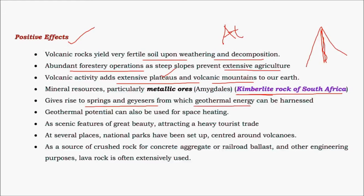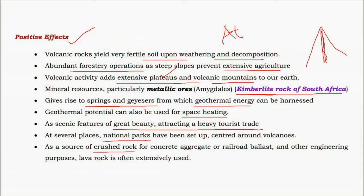Geothermal springs and geothermal energy can also be used for space heating. These are a direct result of volcanic activity. Volcanic zones give rise to good tourist spots of great economic value, with several national parks surrounding them, like Yellowstone National Park in the USA. Volcanic rocks also provide material for building construction and road-making — concrete, generally called 'conquer,' comes from igneous volcanic rocks.